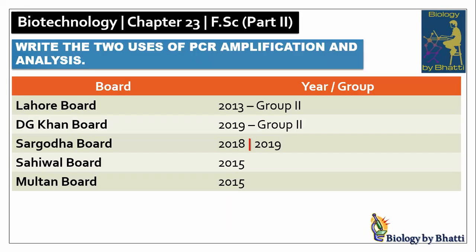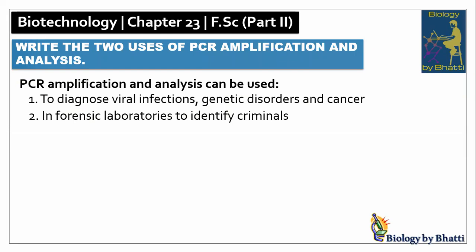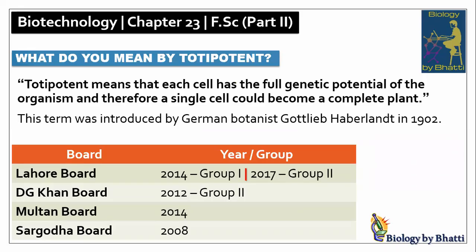Short question number nine: Write two uses of PCR amplification and analysis. Past paper references: Lahore board 2013 group 2; DJ Khan board 2019 group 2; Sargoda board 2018 and 2019; Saiwal board 2015; Multan board 2015. PCR amplification can be used for the diagnosis of viral infections, genetic disorders, and cancers. It is also used in forensic laboratories to identify criminals.